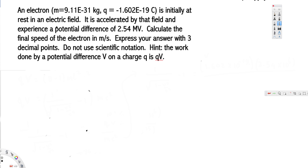The electron is initially at rest in an electric field, which means we have potential energy in the electric field. The potential energy equation in an electric field is given by q times V, where capital V is voltage and q is the charge of the electron.